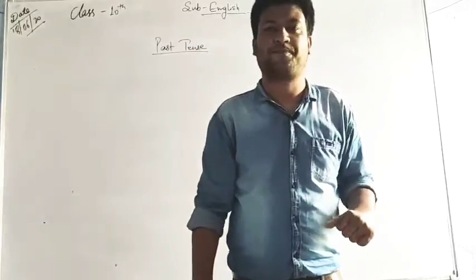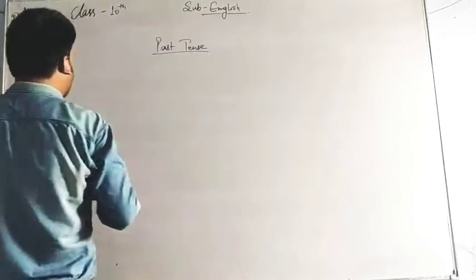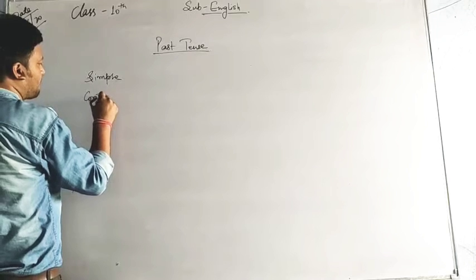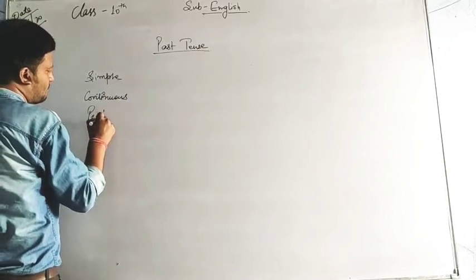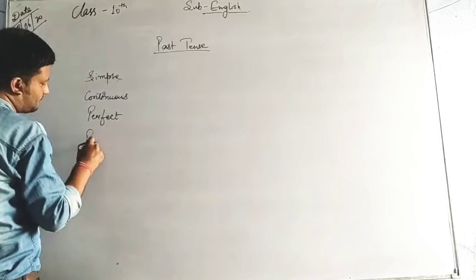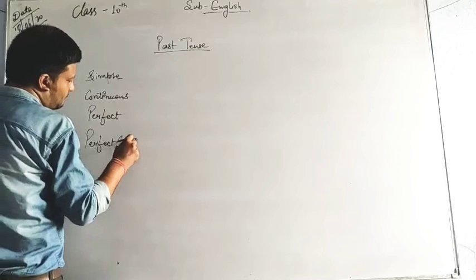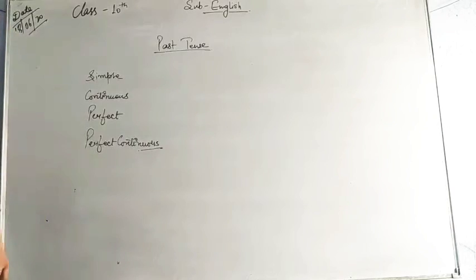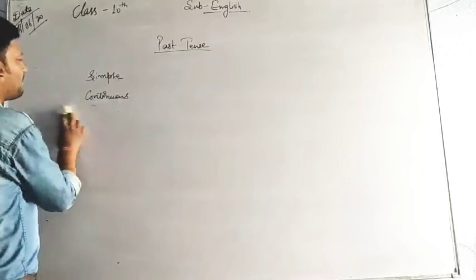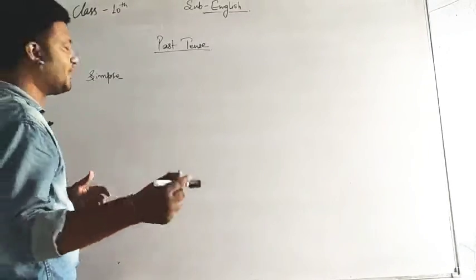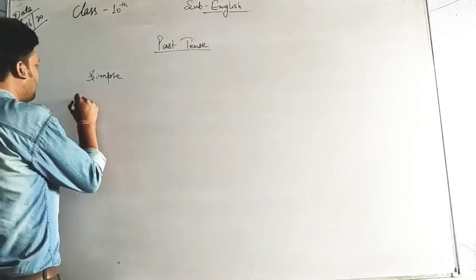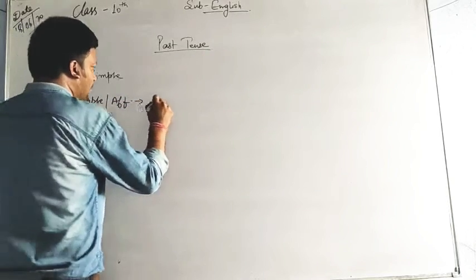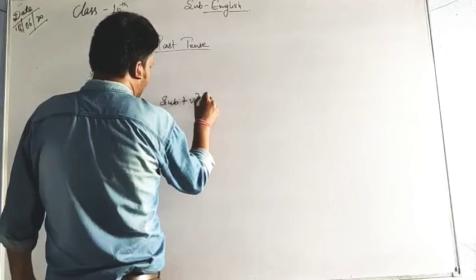Past tense also has four parts: simple, continuous, perfect, and perfect continuous. We are going to study the very first one — the simple part. Before telling you the uses, let me write the formulas. The structure for simple or affirmative sentences is: Subject + Verb second form + Object.